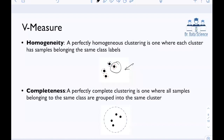Completeness is almost the opposite. A perfectly complete clustering is one where all samples belonging to the same class are grouped into the same cluster. A trivial case is assigning all samples to a single cluster — this is perfectly complete since all same-class samples are together, but clearly there's tension between homogeneity and completeness.